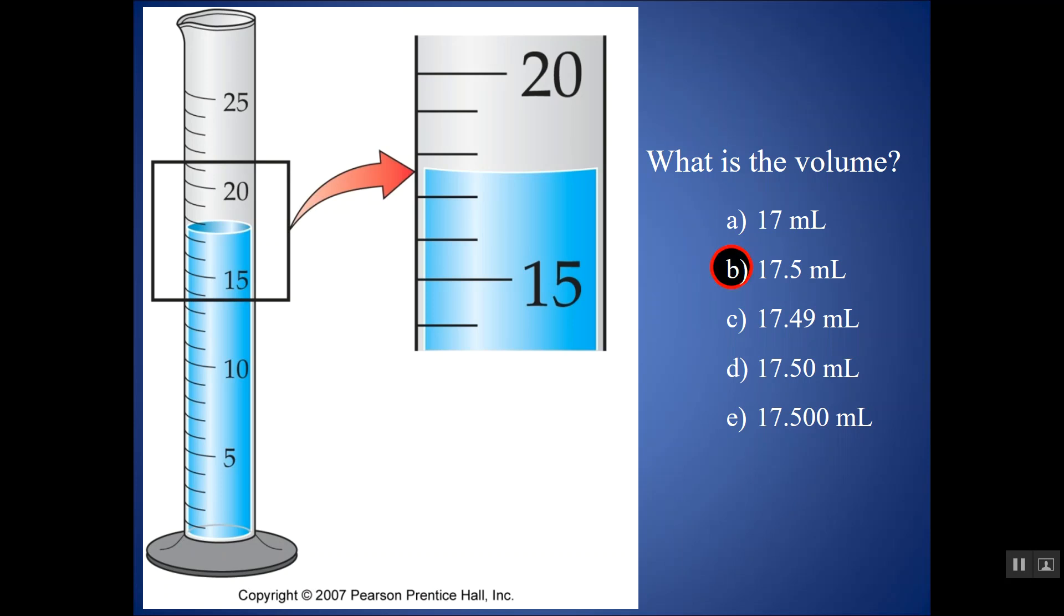So what we record is what we know from certainty from the scale, 17, plus one more estimated digit, in this case .5. And again, you might record a 17.4, and that's okay. So always we want to estimate that last digit and record what we know exactly, plus one uncertain digit.